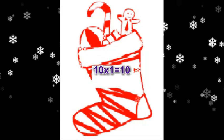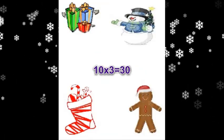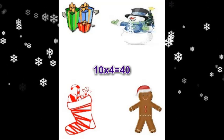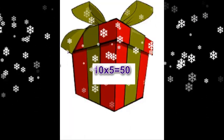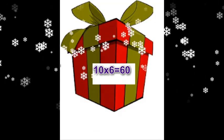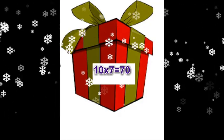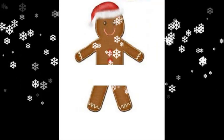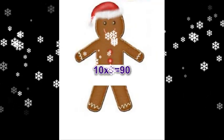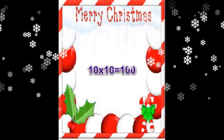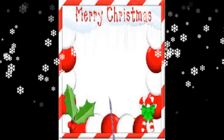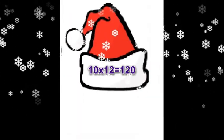Ten times one equals ten. Ten times two equals twenty. Ten times three equals thirty. Ten times four equals forty. Ten times five equals fifty. Ten times six equals sixty. Ten times seven equals seventy. Ten times eight equals eighty. Ten times nine equals ninety. Ten times ten equals one hundred. Ten times eleven equals one hundred ten. Ten times twelve equals one hundred twenty.